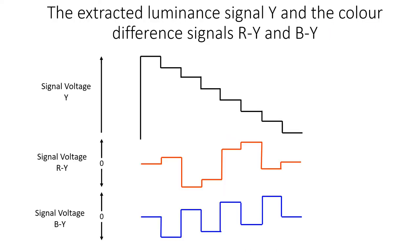This diagram shows the luminance signal Y and the two color difference signals R-Y and B-Y. If this signal is received by a monochrome TV receiver then the color difference signals are disregarded and the luminance signal is used to create a black and white picture as described in the previous video.